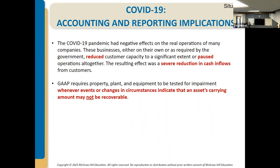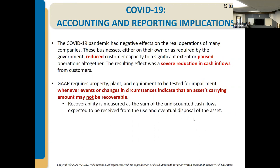GAAP requires that when you're testing for impairment, it generally has to be a situation where the asset may not be recoverable. For fixed assets, you do the same impairment test where you first look at undiscounted cash flows for the future of that equipment over the whole life of the asset — not just your use of it, but also what you can get for it at the end. For an asset to be impaired, it would need to potentially lose resale value as well.